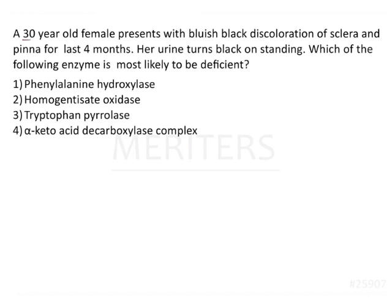In this question, a clinical scenario is given in which a 30-year-old female patient is presenting with bluish-black discoloration of the sclera and pinna since 4 months. Her urine turns black on standing. This is a characteristic finding — the patient's urine turns black upon standing — therefore this is a typical presentation which reminds us of the condition called alkaptonuria.